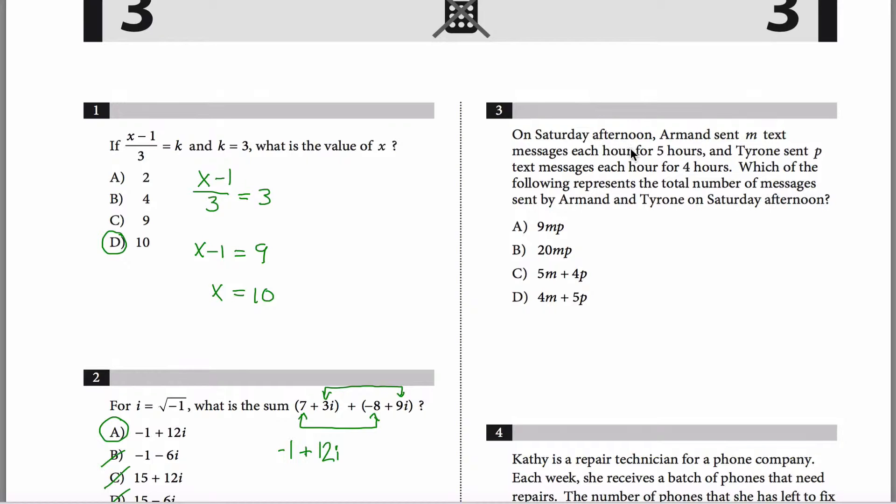All right, the third one. On Saturday afternoon, that's not relevant, Armand sent m text messages each hour for five hours. So think about what that means. In the first hour, he sent m. In the second hour, he sent m more. So now he sent twice m. In the third hour, he sent m more. So now he's sent three m. And then another m the next hour and another m the next hour. In total, Armand would have sent five m text messages. This is Armand. And then what about Tyrone? Well, Tyrone sent p text messages every hour for four hours. So p in the first hour, p more, p more, p more. I guess he would have sent four times whatever p is equal to. These are the text messages that Tyrone sent. Which of the following represents the total number of text messages? So not just Armand's, but Armand's and Tyrone's. If you want to add those together, you get five m plus four p, which is option C here. And that would be your answer.